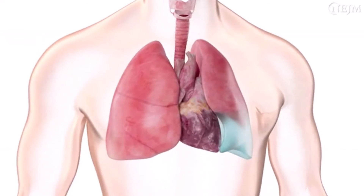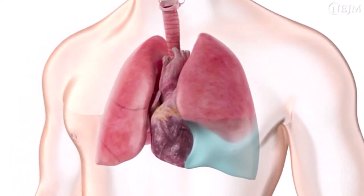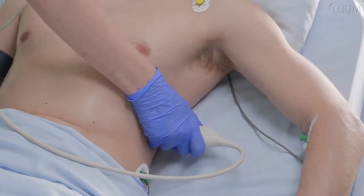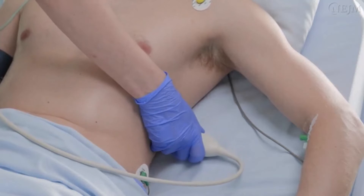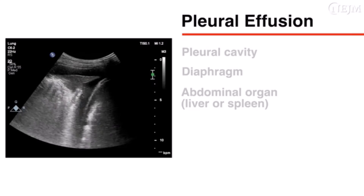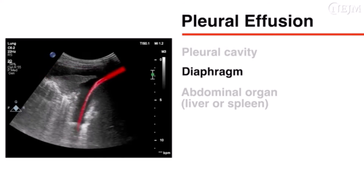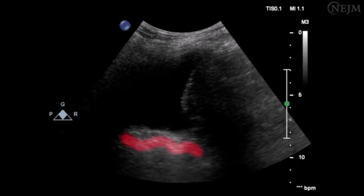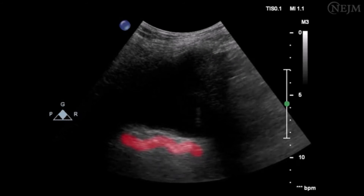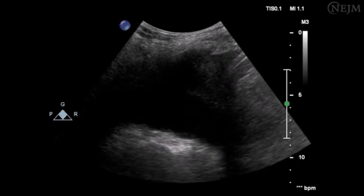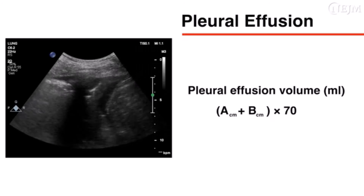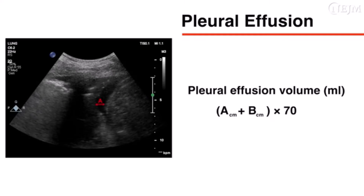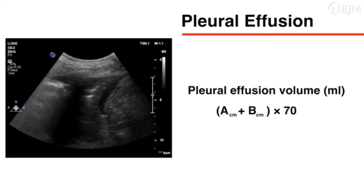Pleural effusion describes the presence of fluid in the pleural cavity. On ultrasonography, pleural fluid usually appears as an anechoic — dark — area around the lung. Fluid is typically found at the lowest point owing to gravity; place the patient in a semi-recumbent position and apply the probe at the base of the chest. Visualize three elements: the pleural cavity, the diaphragm, and an abdominal organ — either the liver or the spleen. In some cases you may see the thoracic spine, a non-specific finding known as the spine sign, which indirectly indicates the presence of fluid in the pleural cavity. To estimate effusion volume, measure the distance from the diaphragm to the base of the lung, and the lateral surface of the chest wall to the lung; add these measurements in centimeters and multiply by 70 to obtain the volume in milliliters.